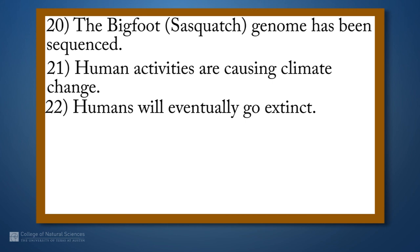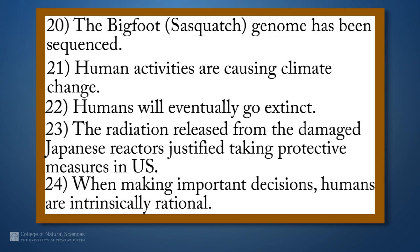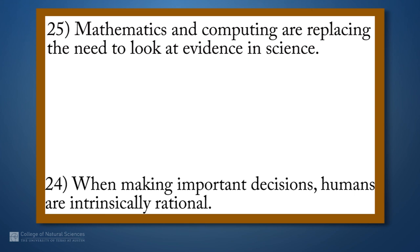Twenty-one, human activities are causing climate change. By the way, we're headed for twenty-eight of these, so there is an end in sight. Twenty-two, humans will eventually go extinct. Twenty-three refers to a meltdown that occurred in Japan, I don't know, four or five years ago. The radiation released from damaged Japanese reactors justified taking protective measures in the U.S., and I mean personal protective measures. Going out and buying iodine and eating it. Twenty-four, when making important decisions, humans are intrinsically rational. Twenty-five, mathematics and computing are replacing the need to look at evidence and science.